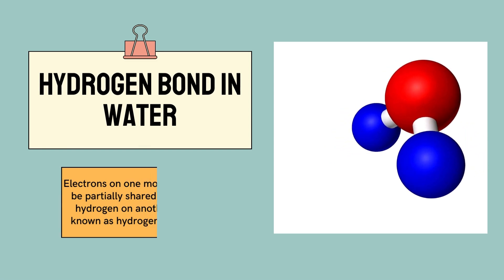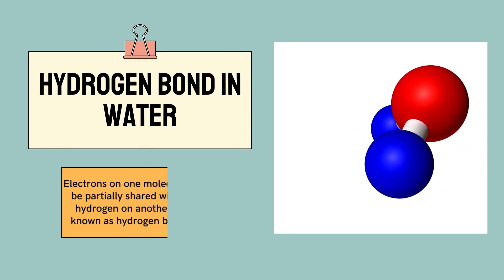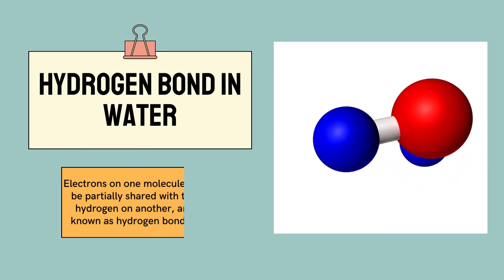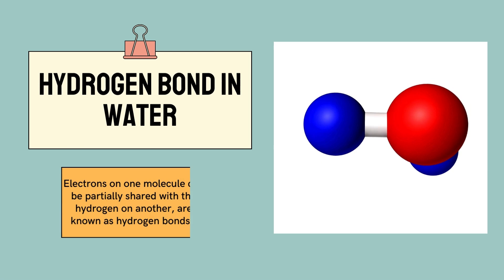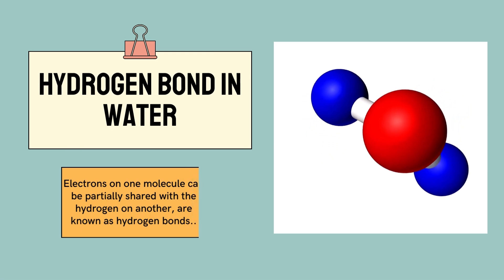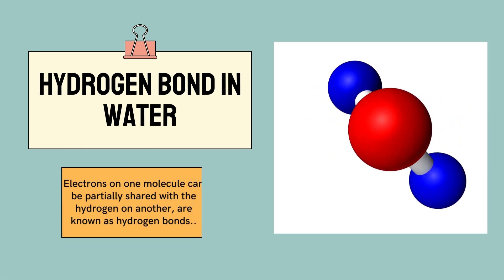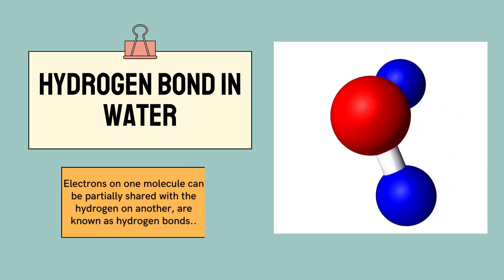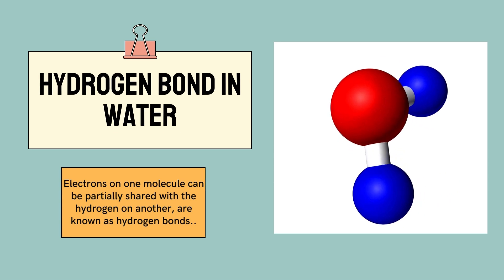Hydrogen bonding in water — electrons on one molecule can be partially shared with the hydrogen on another. This is called the hydrogen bond.